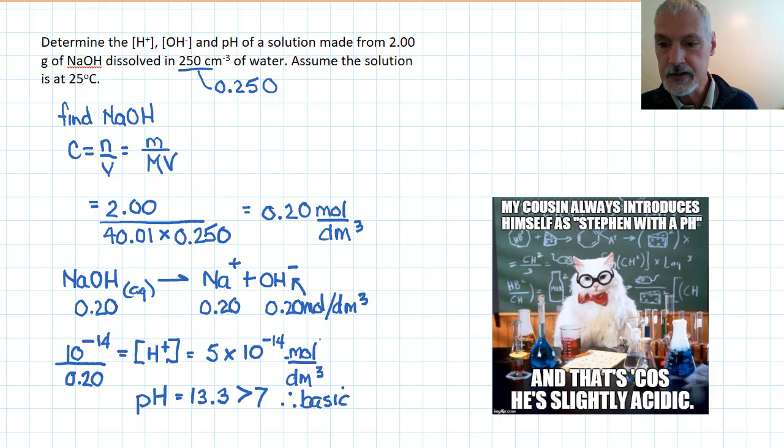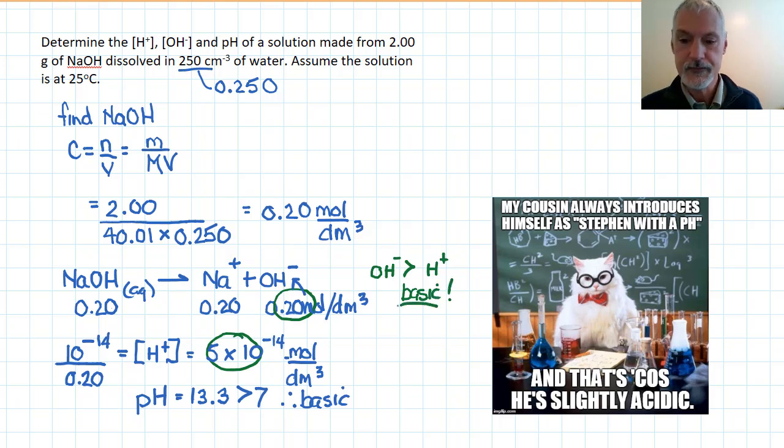Now there is another way I can determine that this solution is basic, and that's by quickly examining these two numbers. My concentration of my base particle, comparing it to the concentration of my acid particle. And here I can see that the OH ion is significantly bigger than the H plus ion, which leads me to the same solution, that this is a basic solution. So I can get it by either comparing the concentrations of the ions or by examining the pH.